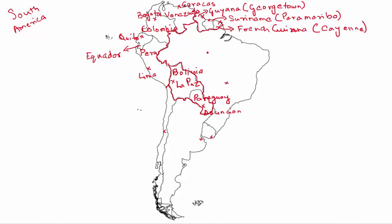The large country on the northeastern side of South America is Brazil, and Brazil has its capital at Brasília — pretty easy to remember: Brazil and Brasília. Then below Brazil there's one small, almost field-shaped country, which is Uruguay, with its capital at Montevideo.